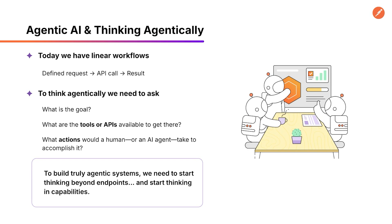But agentic workflows are different. They're modular and reactive, and they use tools. So you're not just calling an API — you're giving an AI agent access to capabilities, and then letting that agent decide how to use them. To break out of that linear mindset, we start by looking at any process and asking three questions: What is the goal? What are the tools or APIs available to get there? And what action would a human or an AI agent take to accomplish it? From there, we can reverse engineer those actions to determine how we externalize this logic into a system that an agent can use on demand. That's really where AI becomes transformative, as a decision-making layer that's coordinating tools in real time. If we want to build truly agentic systems, we need to stop thinking only in endpoints, but also think in the capabilities and sets of tools that we can make available to our agents.